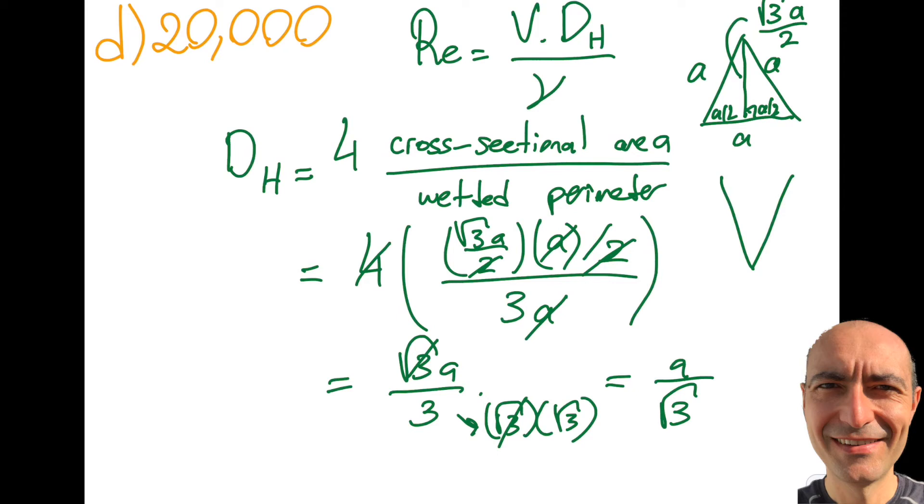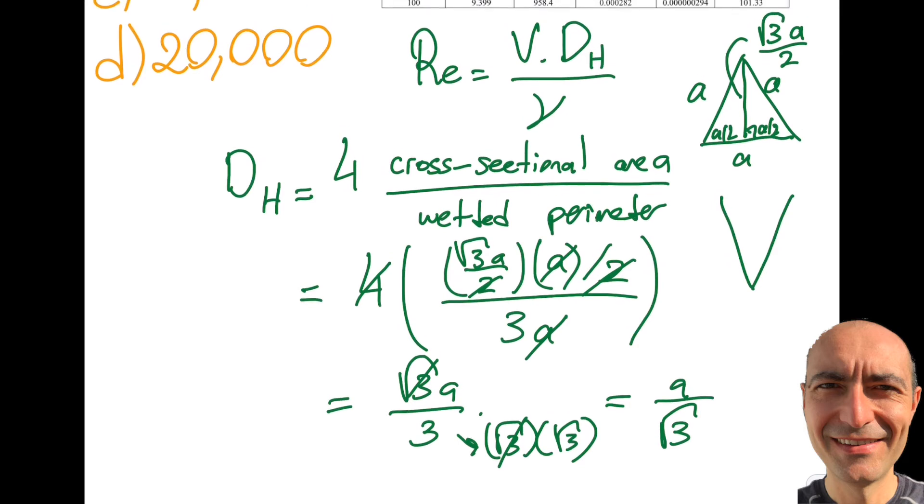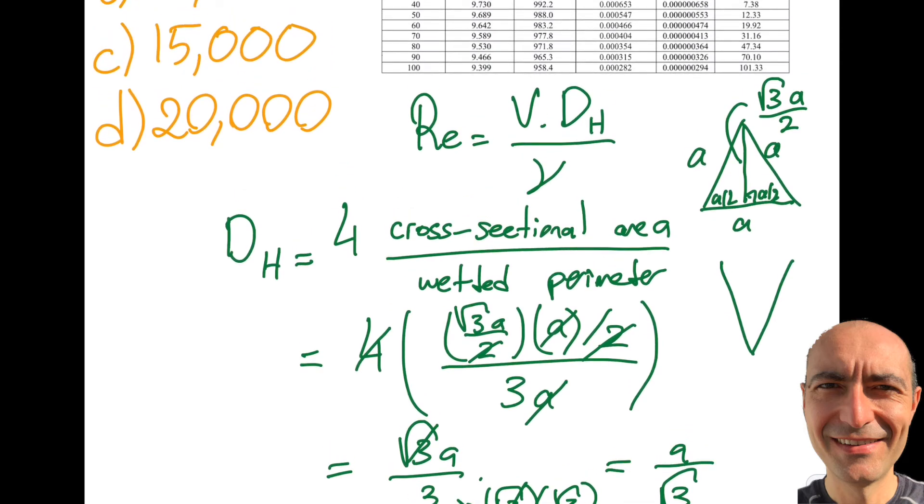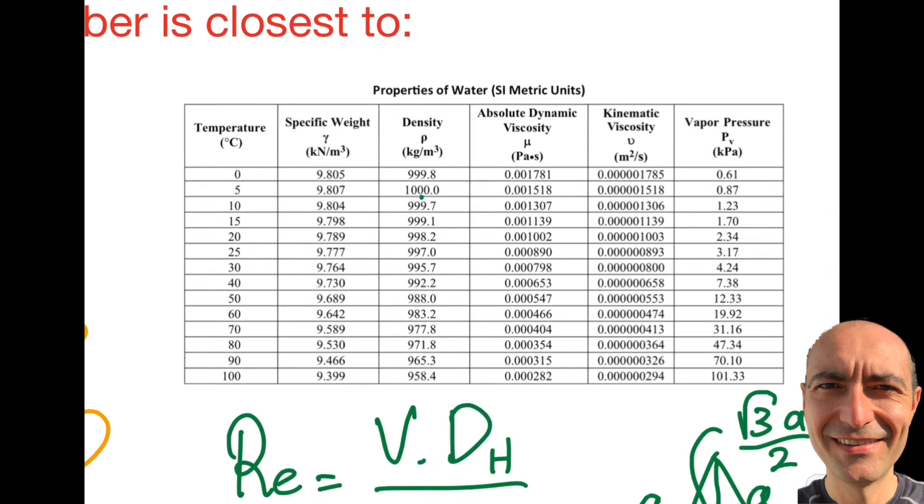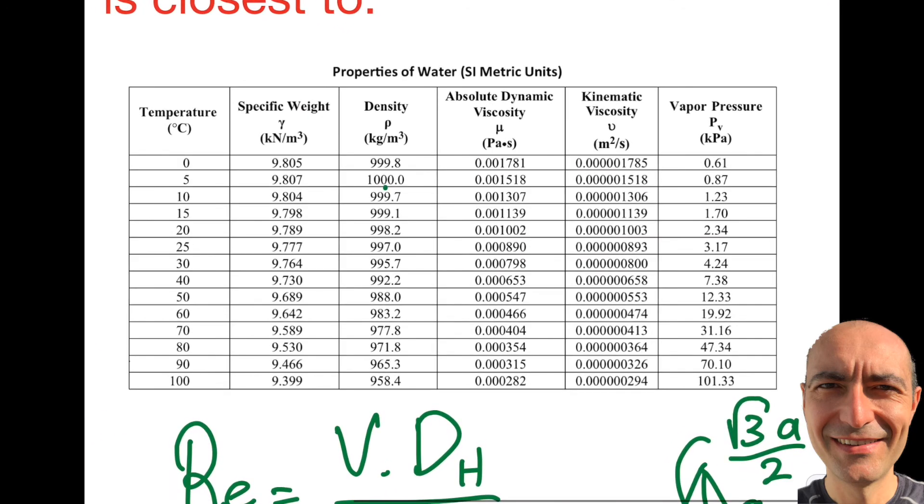I'm good with DH, I'm good with velocity. What about the kinematic viscosity? The question says it's 45 degrees C. Looking here, I kind of have a moment where I feel oh no, I wasn't given 45 degrees.